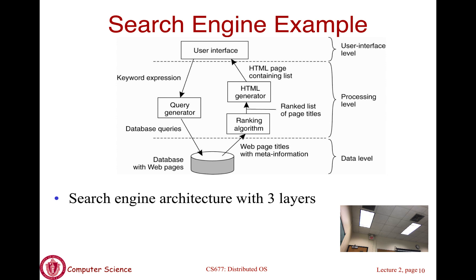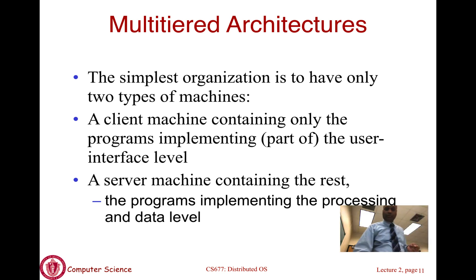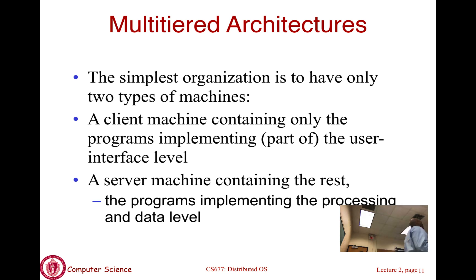This simple example shows you that at the top you have a user interface layer; in the middle is the query generator, HTML generator, and ranking algorithm — those collectively implement the processing tier. Your database at the bottom is essentially the data layer. What is important is that we have these three layers forming part of this distributed application.